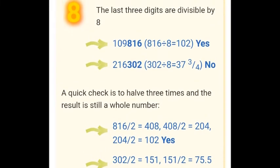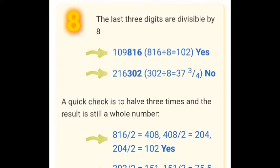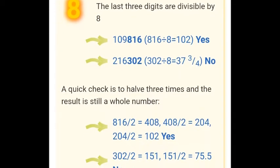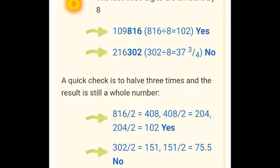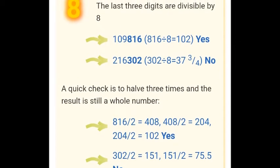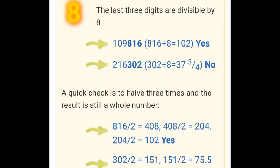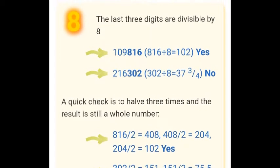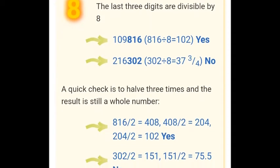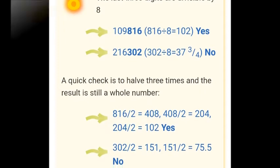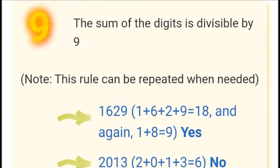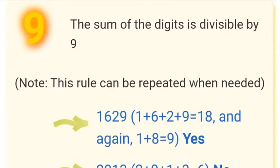A simple example: take 24. Half is 12, half again is 6, half again is 3 — a whole number. So 24 is divisible by 8.